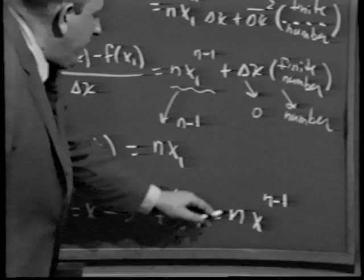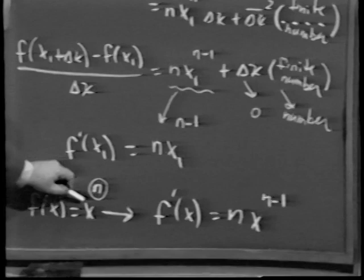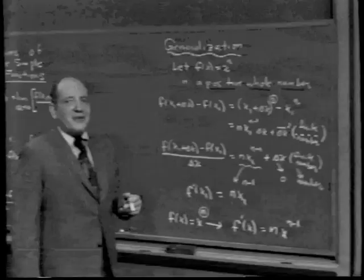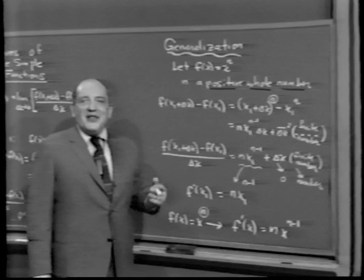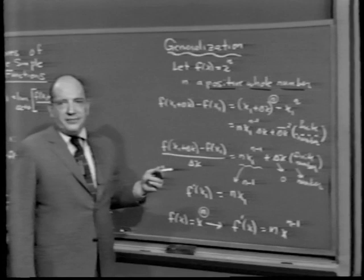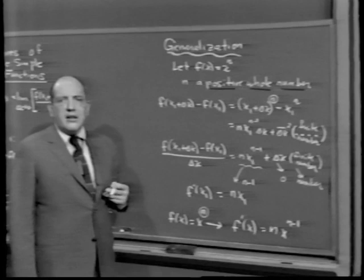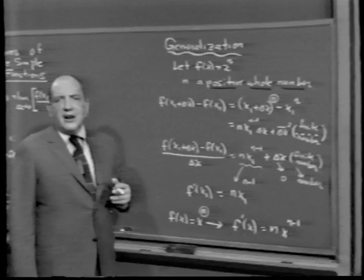Since x₁ was any x, if f of x is x to the n where n is a positive whole number — and we used that fact to apply the binomial theorem — then the derivative is nx to the n minus 1. In other words, to differentiate x to the n, you bring the exponent down and replace it by one less. But don't look at that as a proof; rather, we gave the proof and then observed what the shortcut recipe was. So far, we do not know if that result is true for any other numbers. We'll talk about that more later.